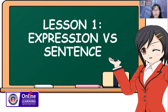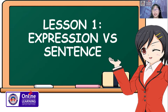But before we differentiate the expression and the sentence, we will first discuss and differentiate nouns versus sentences in the English language. Why do we need to discuss this first? Because the language of mathematics can be learned, but it requires more effort, similar to learning any English language, for us to understand more the language of mathematical ideas. So we need to discuss the nouns versus sentence first.